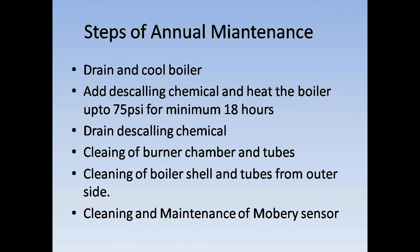First of all we have to drain the water and cool our boiler. Then we have to add the descaling chemical according to the chemical engineer's criteria. We have to heat the boiler up to 75 psi for a minimum of 18 hours. When the descaling chemical has been heated for 18 hours, we then have to drain the descaling chemical.